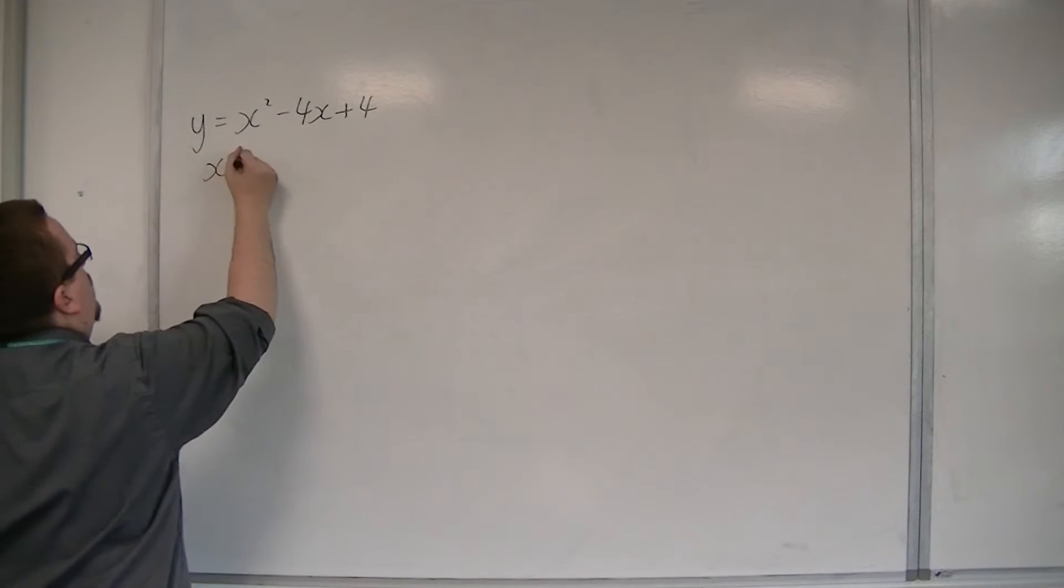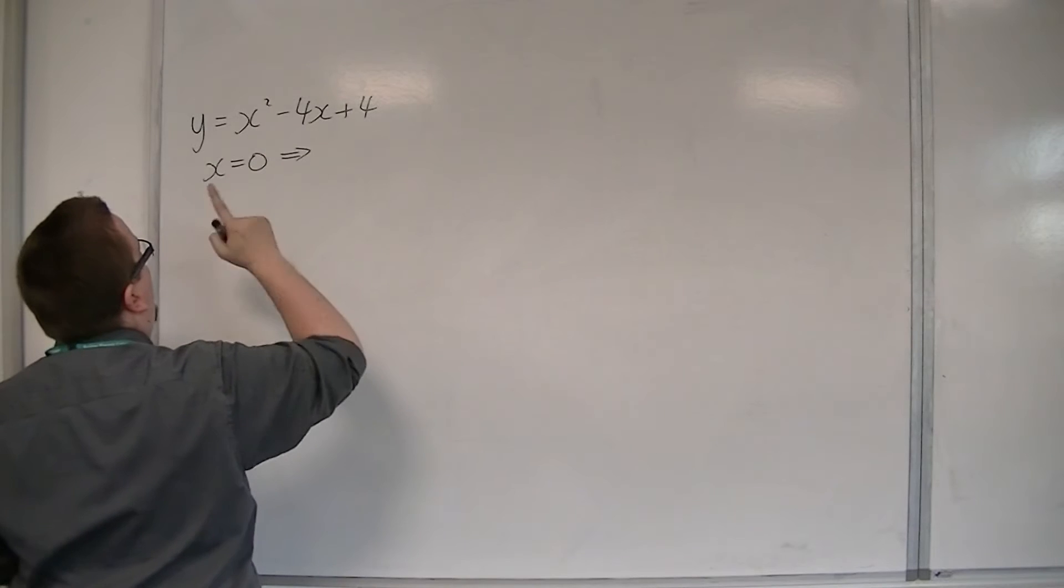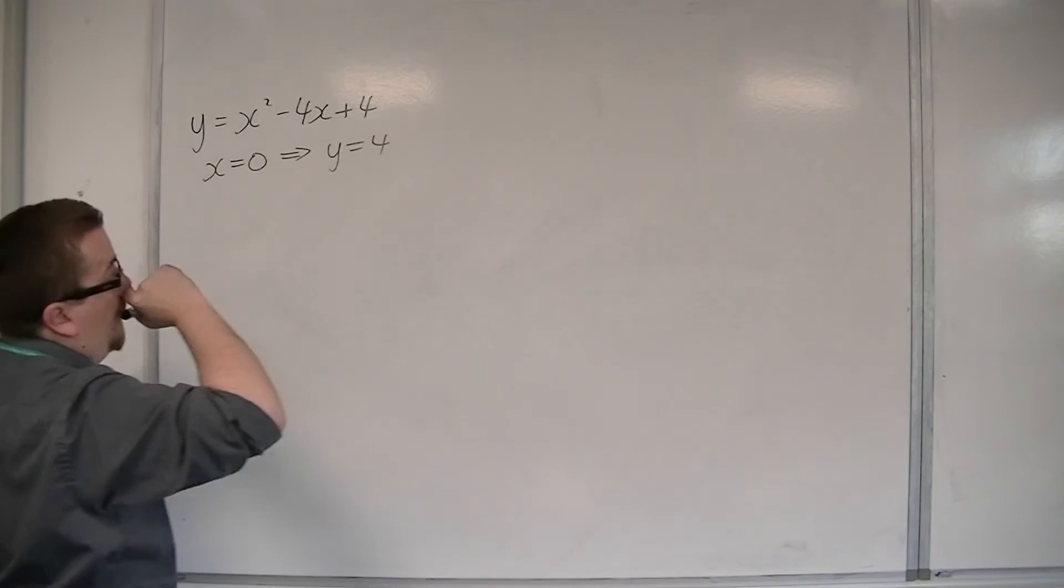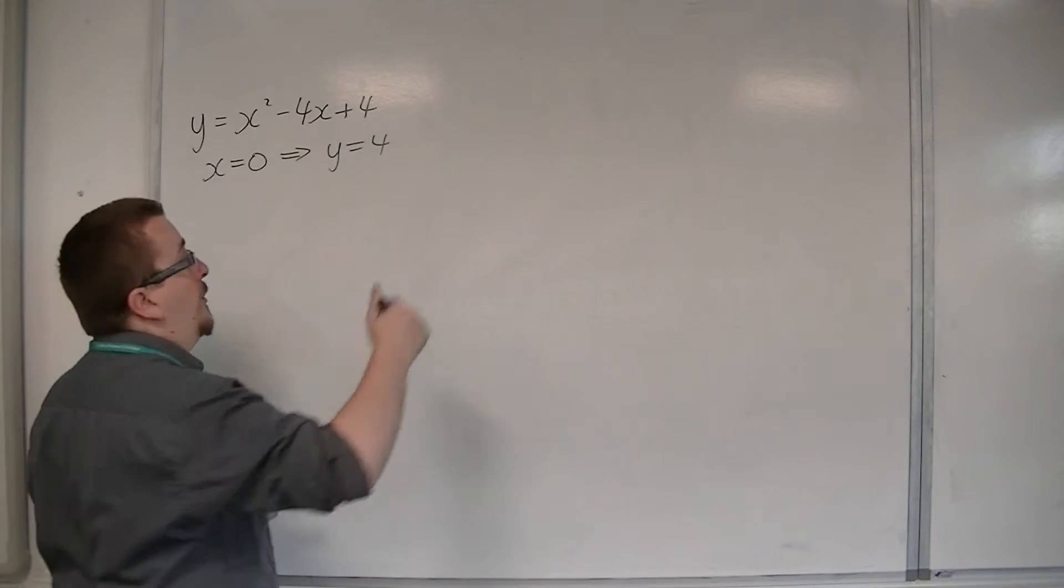We can look at when x is 0. When x is 0, we get y is equal to 4. 0 squared, take away 4 lots of 0 plus 4. So we know where it crosses the y-axis.